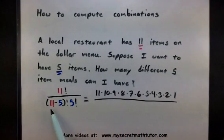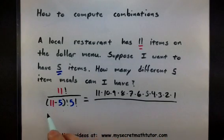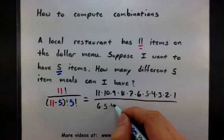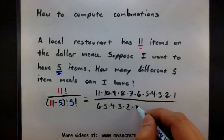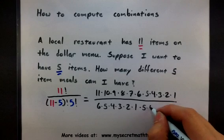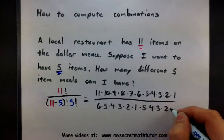Here I have 11 minus 5 factorial. Well, 11 minus 5 is 6 and 6 factorial is 6 times 5 times 4 times 3 times 2 times 1. And then, of course, 5 factorial, 5 times 4 times 3 times 2 times 1.